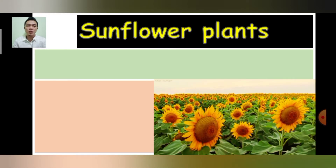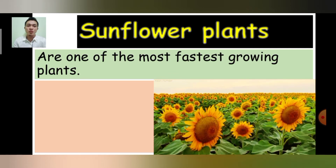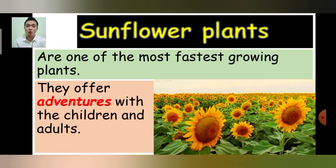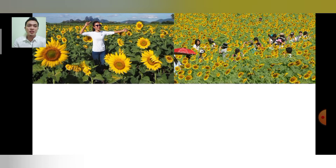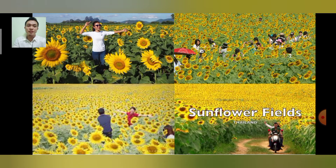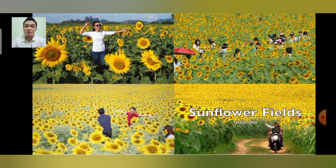Sunflower plants are one of the fastest growing plants. They offer adventures for both children and adults. As you can see in the pictures, both adults and children are enjoying the blooming flowers of sunflower — some taking photos and some riding motorcycles just to experience the beauty of a sunflower farm. I also have experience visiting one of the sunflower farms here in Thailand. It's so nice!